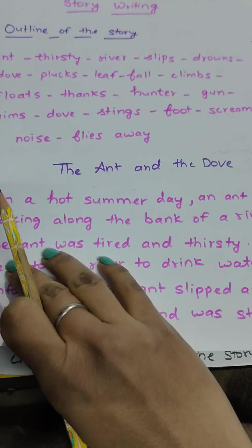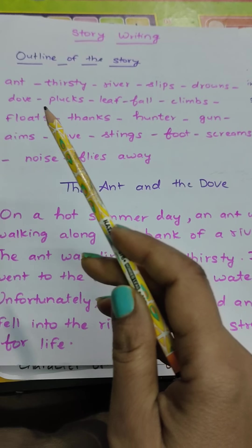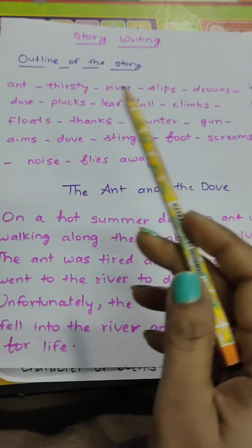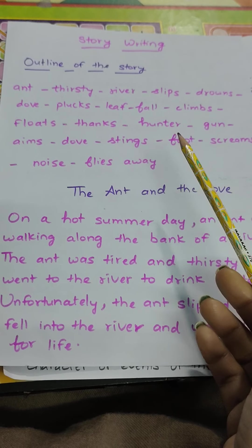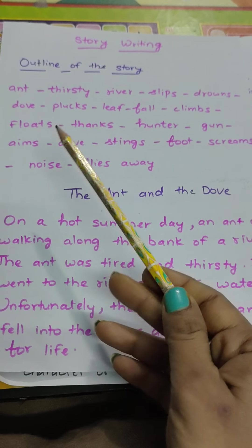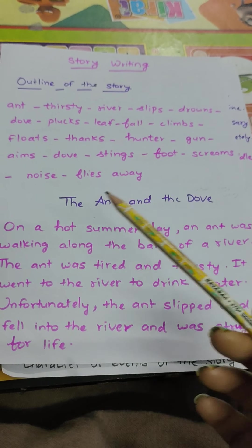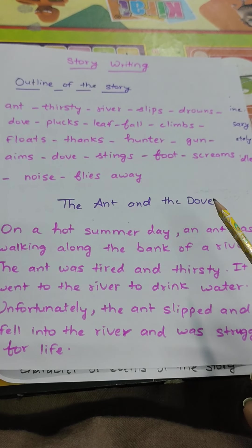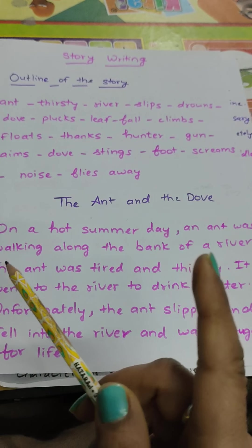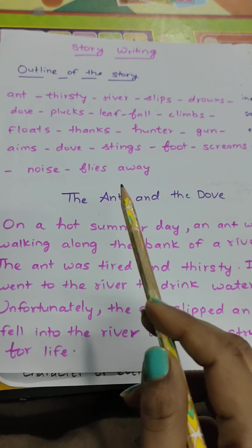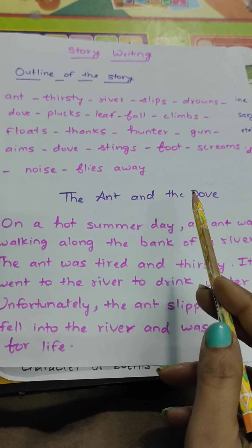For example, our outline is: ant, thirsty, river, slips, drowns, dove, plucks, leaf, fall, climbs. If you read carefully, which characters do we see? Ant and dove. So we take those main characters and make the title: 'The Ant and the Dove.' Also remember: the main words in the title should be in capital letters. As you can see, 'Ant' and 'Dove' are capitalized, and the title begins with a capital letter too.